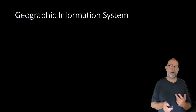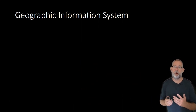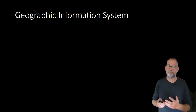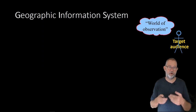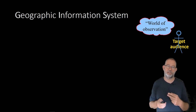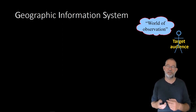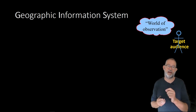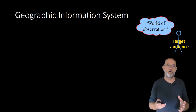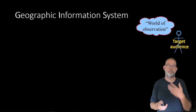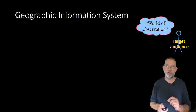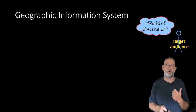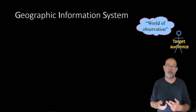If you remember back to the video on conceptual models, I talked about having a world of observation and looking at that world through ontologies or conceptual models. What is interesting in connection with geographic information systems is that we have a target audience. We have some world of observation that we want to communicate or analyze with a specific target audience in mind. So these are our two starting points: our world of observation, our reality, and our target audience.